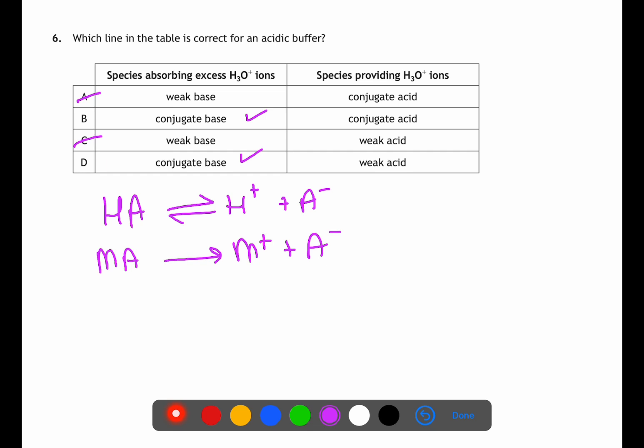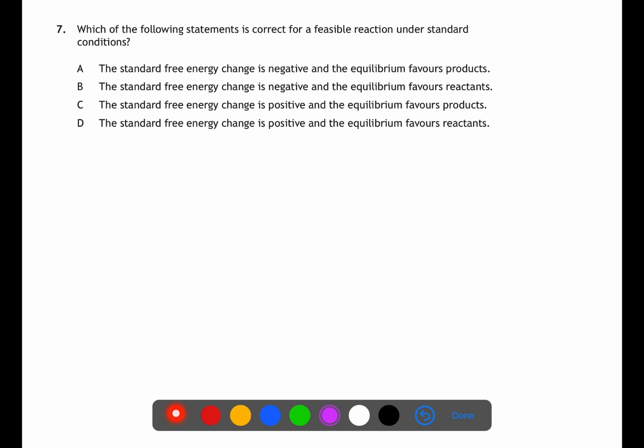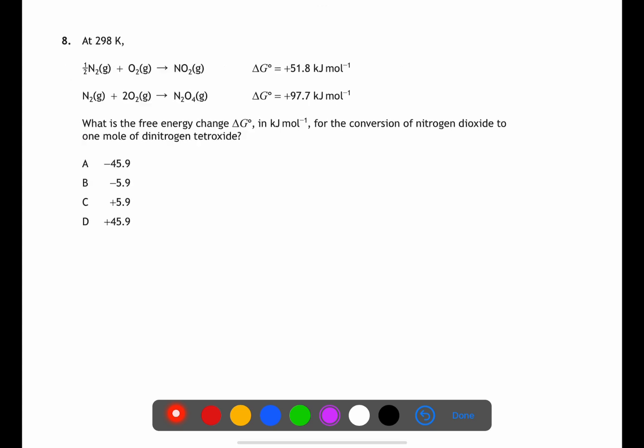Question seven is looking at thermodynamics. We're looking for a statement which is correct for a feasible reaction under standard conditions. A feasible reaction will have delta G as negative. This is a standard free energy change. If the reaction is feasible it will also favor the products for the equilibrium.